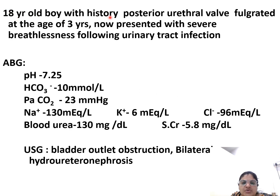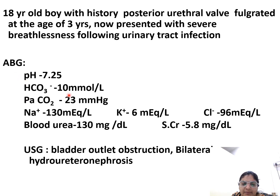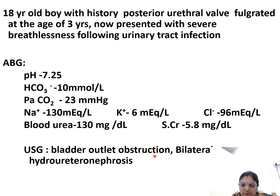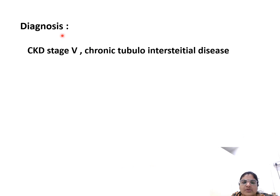An 18-year-old boy with history of posterior urethral valves, diagnosed at age 3, now presented with severe breathlessness following urinary tract infection. ABG report: pH 7.25, bicarbonate 10, pCO2 23, sodium 130, potassium 6, chloride 96, blood urea 130, serum creatinine 5.8. USG shows bladder outlet obstruction with bilateral hydro-ureteronephrosis. Diagnosis: CKD stage 5, chronic tubular interstitial disease.